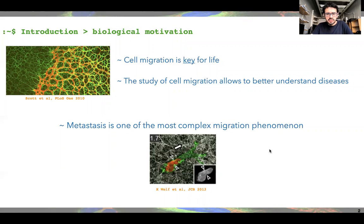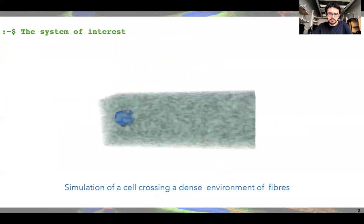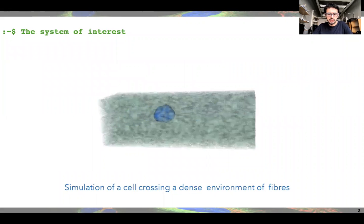Cell migration is key for life, and the study of cell migration allows us to better understand not only health and physiological processes, but also disease. Metastasis, for example, is one of the most complex migration phenomena, and it's not quite well understood yet. The system we are interested in modeling is the single cell crossing through a dense environment composed of fibers, as you see on the screen.